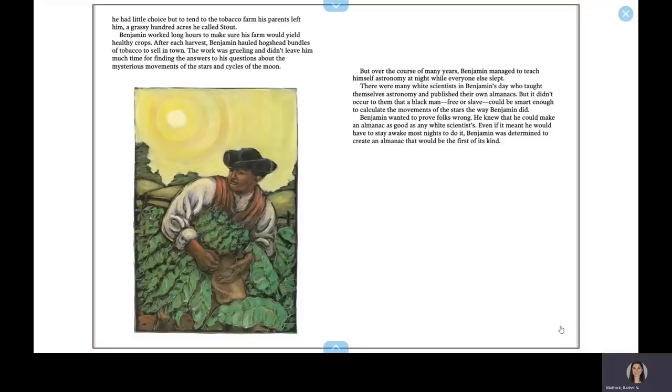There were many white scientists in Benjamin's day who taught themselves astronomy and published their own almanacs. But it didn't occur to them that a black man, free or slave, could be smart enough to calculate the movements of the stars the way Benjamin did. Benjamin wanted to prove folks wrong. He knew that he could make an almanac as good as any white scientist, even if it meant he would have to stay awake most nights to do it. Benjamin was determined to create an almanac that would be the first of its kind.